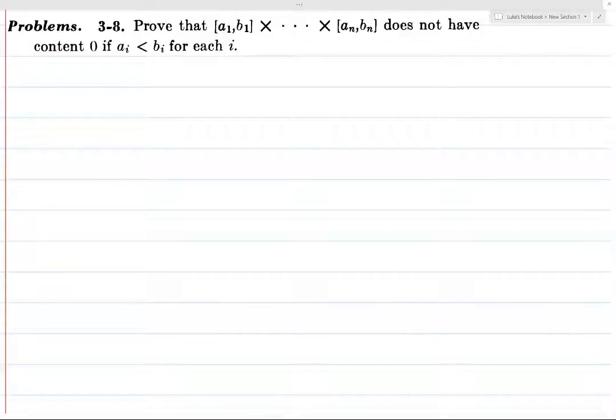So what we're going to do is we're going to take a finite cover. So in order to have content zero, we need to be able to have a finite cover whose total volume is less than epsilon for any given epsilon. And so what we're going to do is we're going to assume that ai is less than bi for each i and take a finite cover and show that the volume can't get as small as you want.